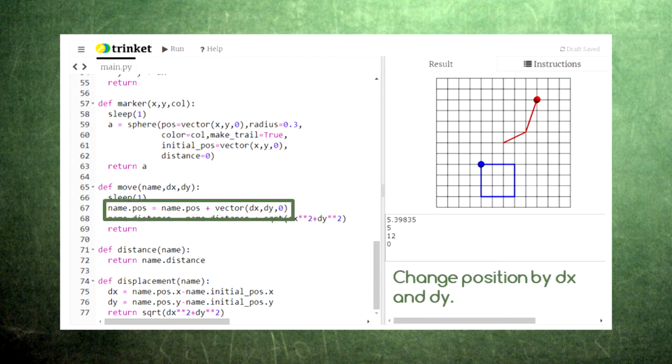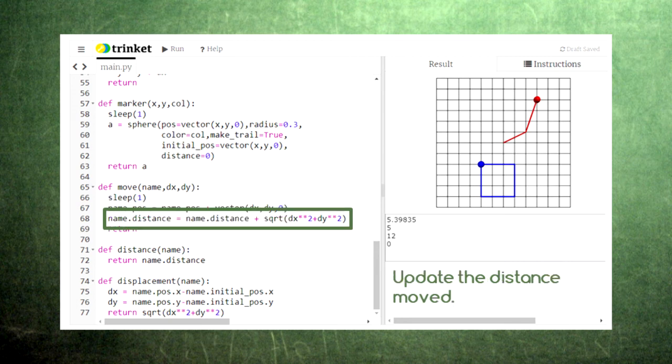The move function adds the provided values dx and dy to the marker's position value. vpython then takes care of moving the marker in our animation window. The function then calculates the amount of distance moved in this step using the Pythagorean theorem and adds this to the marker's record of distance traveled.